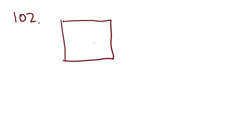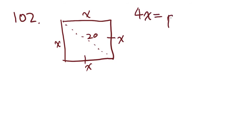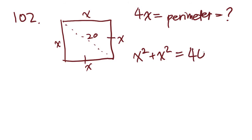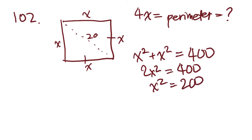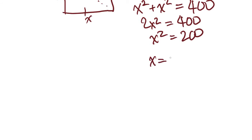Problem 102: if a square mirror has a 20-inch diagonal, what is the approximate perimeter of the mirror in inches? Since it's a square, all sides are the same, and the perimeter is 4x. Using the Pythagorean theorem: x squared plus x squared equals 20 squared, which is 400. So 2x squared equals 400, x squared equals 200, and x equals the square root of 200.